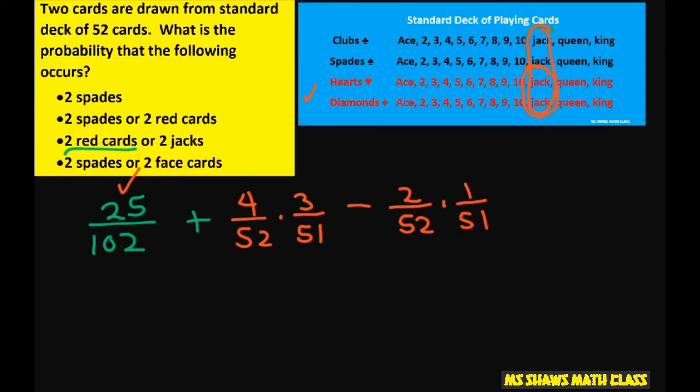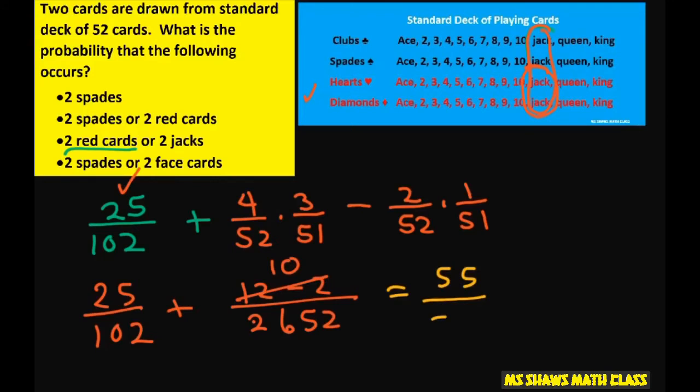You have to subtract that out. So I have 25 divided by 102 plus 12 minus 2 divided by 2, what's the number, 2652. Again, you could just use your calculator. That's going to change to 10, and then it makes it easier to put in the calculator if you simplify first. So that's going to end up being 55 divided by 221.